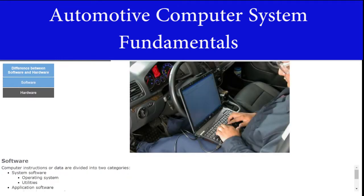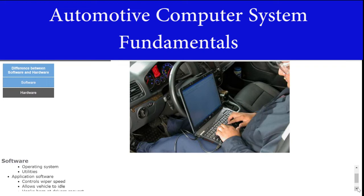Computer software is the program that enables the computer to perform a specific task, which can consist of computer instructions or data. Software can be divided into two categories: system and application software. Software can include the operating system and utilities that enable the computer to function. Application software includes programs that do work for the driver, such as regulate wiper speed on automatic wiper systems, allow the vehicle to idle, and honk the horn when requested by the driver.